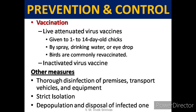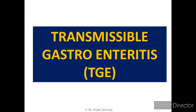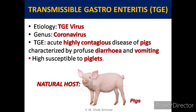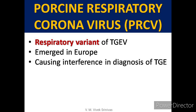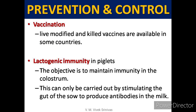With this we conclude infectious bronchitis. The next infection under this family is transmissible gastroenteritis (TGE). The disease is caused by the TGE virus of genus Coronavirus and causes an acute, highly contagious disease in pigs characterized by profuse diarrhea and vomiting, with piglets being highly susceptible. Porcine respiratory coronavirus (PRCV), a respiratory variant of TGE virus, was first emerged in Europe.